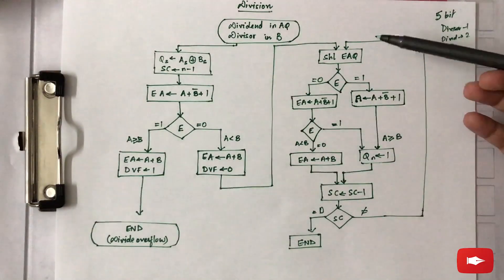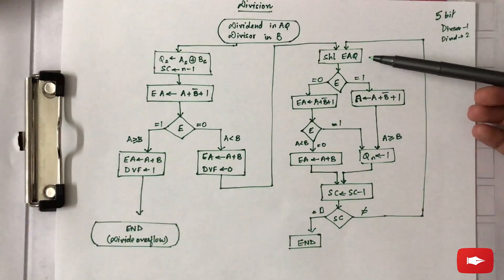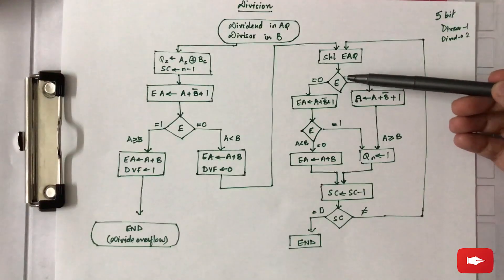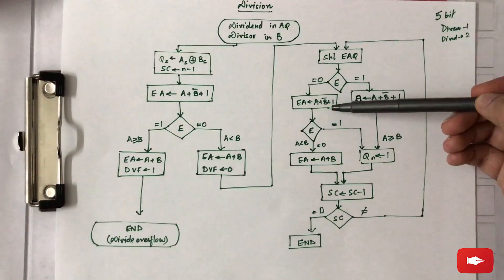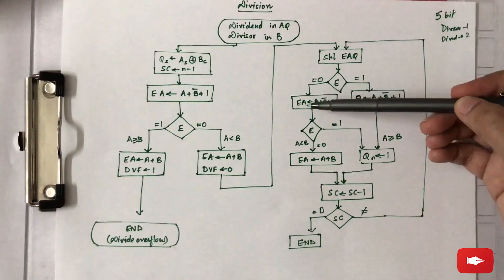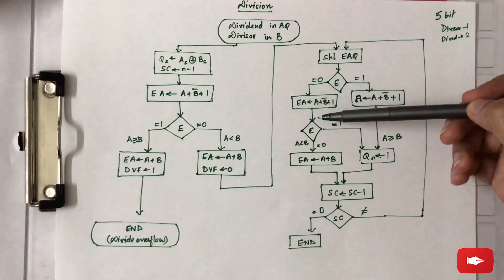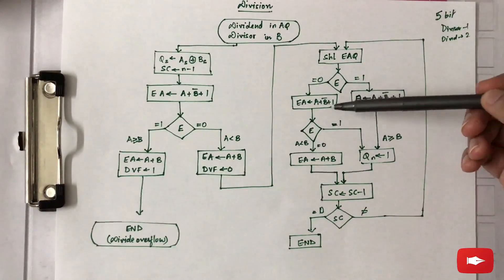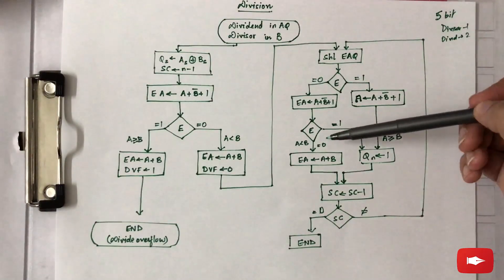The first step is that we perform the shift left of EAQ. After shifting, we check whether E is zero or one. If it is zero, a subtraction is performed and the result is stored in EA. After that, again the value of E is checked.